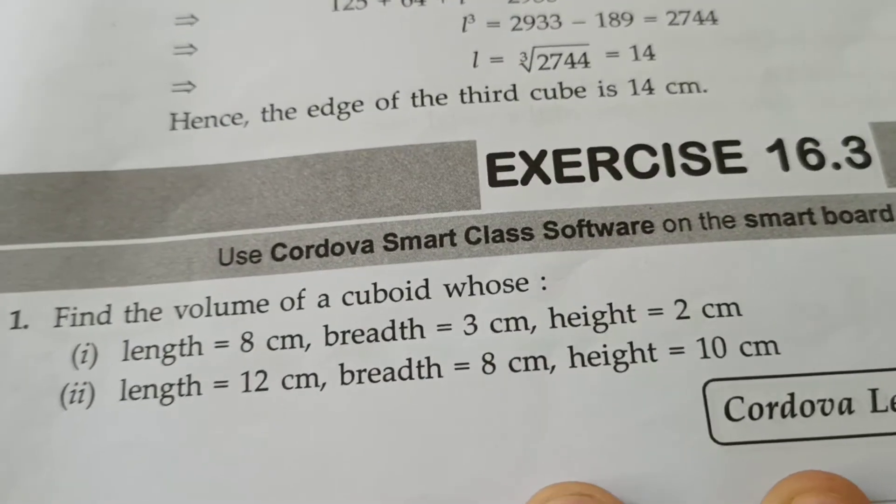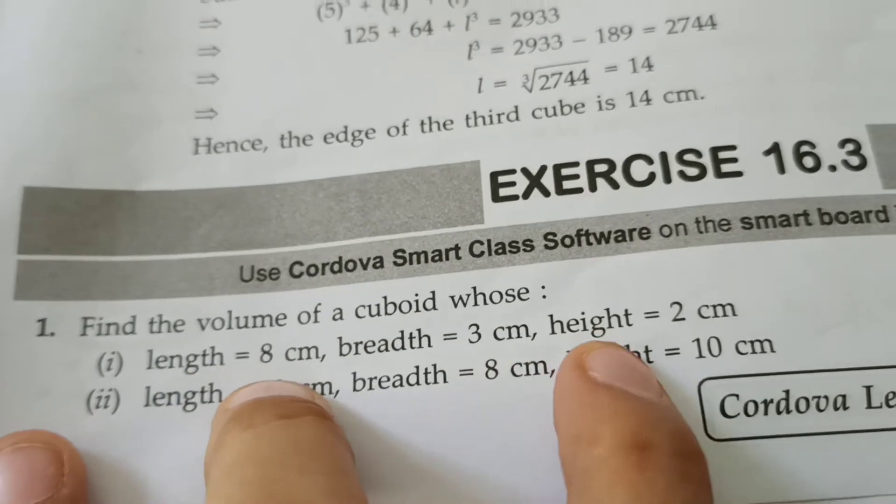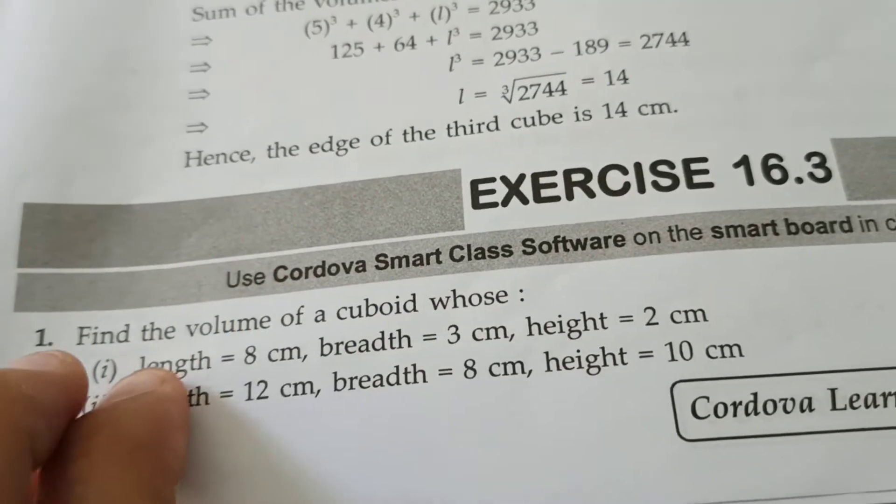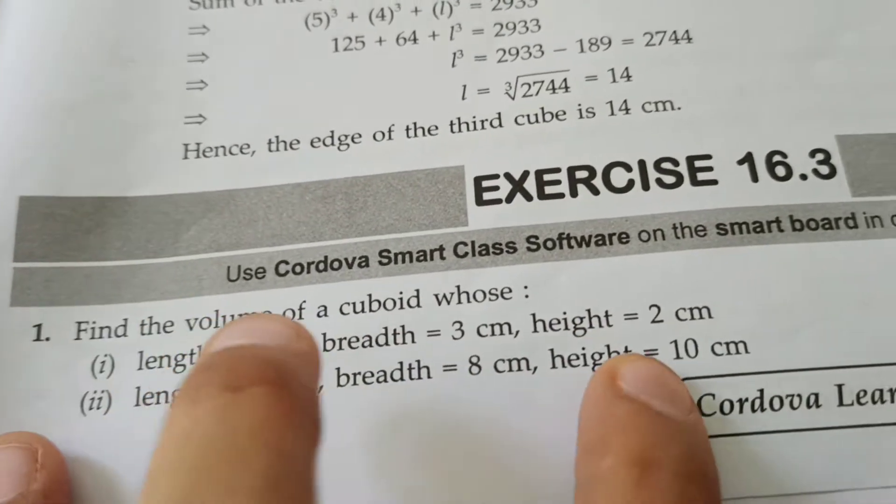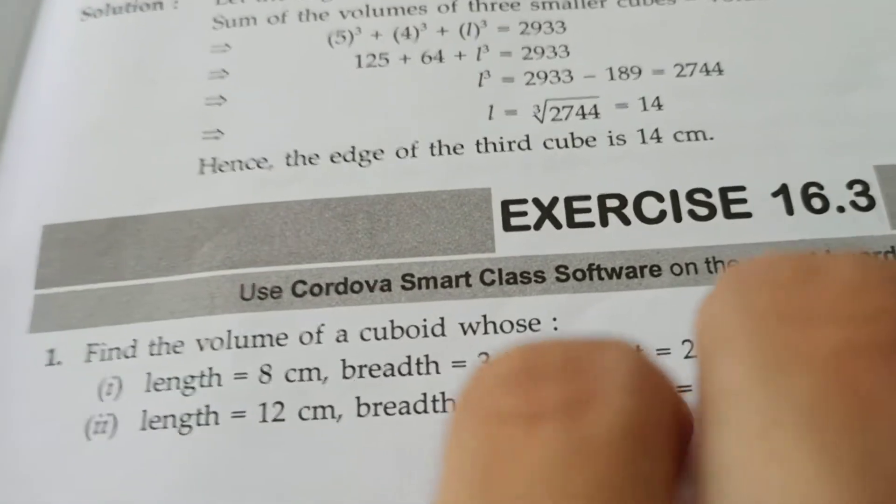Morning students, today we are going to start with Exercise 16.3, question number one. Find the volume of a cuboid whose length, breadth, and height is given. So the volume of a cuboid formula is length into breadth into height. So we multiply these three numbers, and since they're in centimeters, the answer is in centimeter cube.